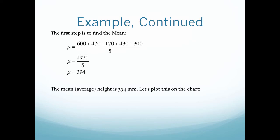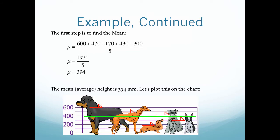The mean or average height is 394 millimeters. Let's plot this on the chart. So the red individual lines are the heights of each respective dog, and then the green line is a representation of the average or the mean of our dogs. Visually, you could look at these dogs and compare how far apart they are from the true average of all dogs.